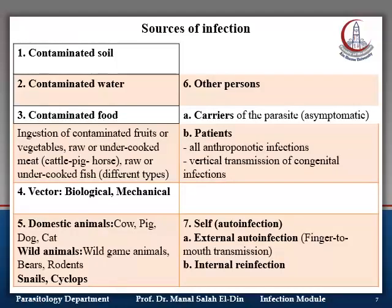There are also wild animals such as game animals, bears, and rodents. Additionally, ticks and other arthropods can transmit the parasite's infective stage to humans. It can also be another person, such as a carrier — someone who carries the parasite and passes the infective stage in their excreta, but is asymptomatic. They are a source of infection to others, yet remain asymptomatic.